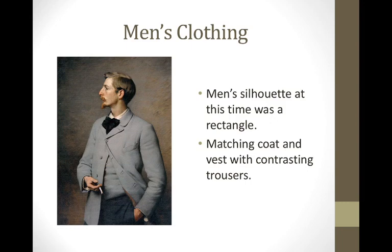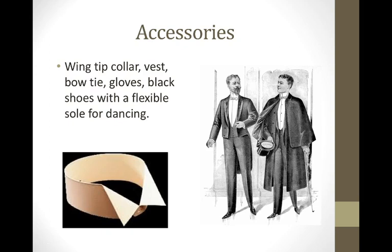Now shifting to men's fashion: the silhouette at this time was a rectangular silhouette. They generally wore a matching coat and vest with contrasting trousers — you can see they've got a vest, a coat, and trousers of a different color, typically darker than the upper body. Men also wore accessories: a wingtip collar, a vest, a bow tie, gloves, and black shoes with a flexible sole for dancing. This was the more formal attire for men — this man even has tails on his jacket.